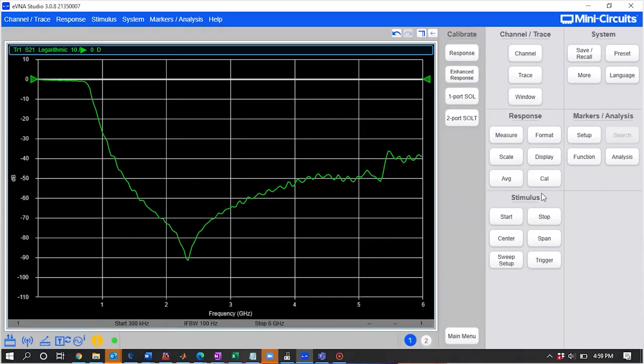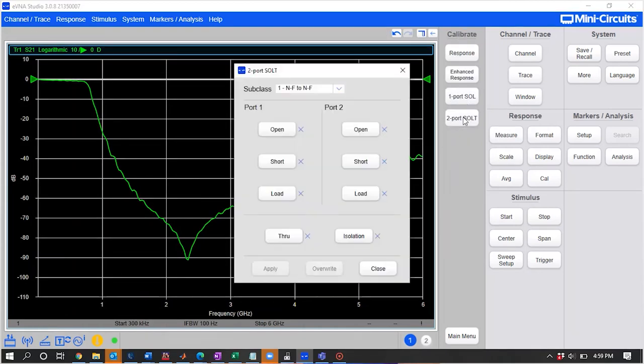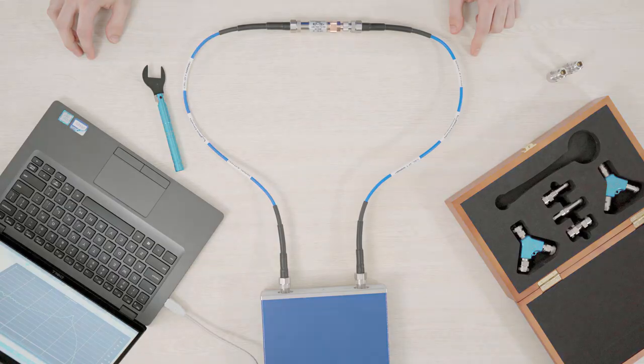Next, you want to set the calibration type. Here, I'm selecting full two-port SOLT method. Now you should see a pop-up menu with the standards you need to measure. At the top, choose the device subclass. The device subclass defines the connector types of the DUT. Our DUT has an N-male connector on port 1 and an N-female connector on port 2, so this is an N-male to N-female subclass device.